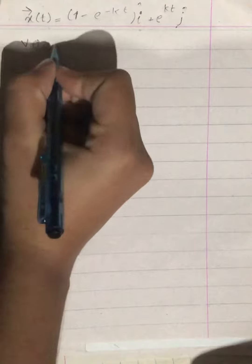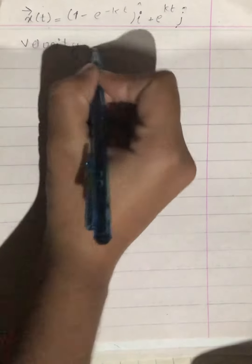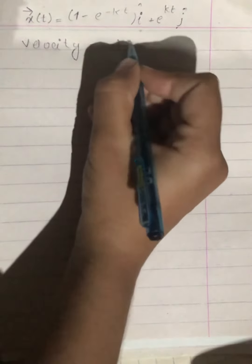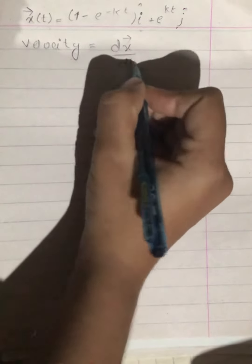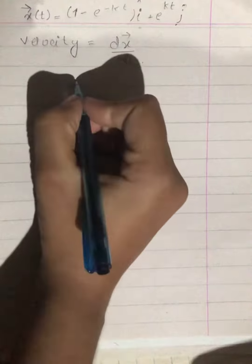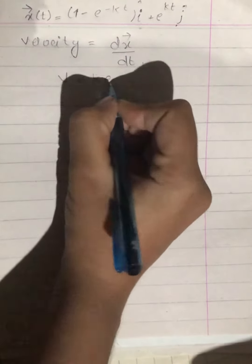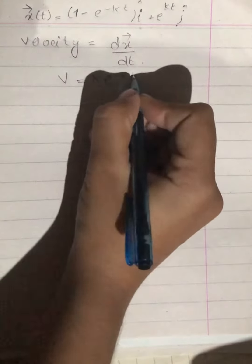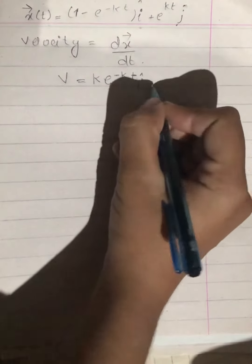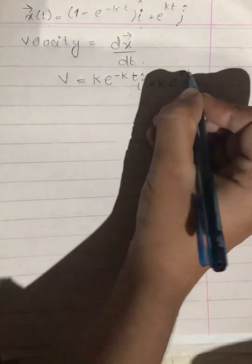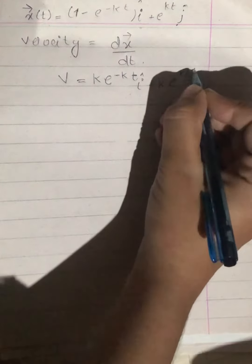Velocity is dx/dt. So when we differentiate it, we have velocity equal to k*e^(-kt) i-cap plus k*e^(kt) j-cap.